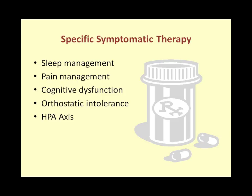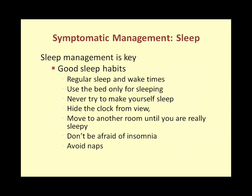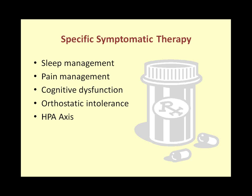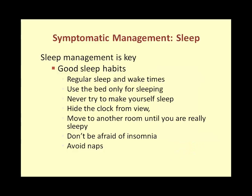The next step in the stepwise approach is specific symptomatic therapy, addressing sleep, pain, cognitive dysfunction, orthostatic intolerance, and HPA axis abnormalities (hypothalamic-pituitary-adrenal axis). Of these five areas, sleep is probably the most important to treat. Due to time limitations, the presentation emphasizes sleep and pain therapies, with other questions welcome during the Q&A. Sleep management is really key to improvement in CFS and fibromyalgia — specialists start treatment there.